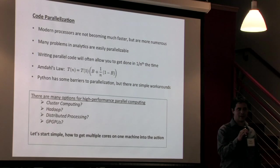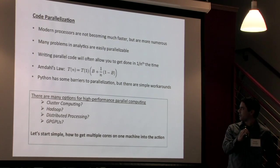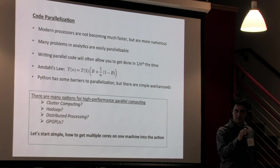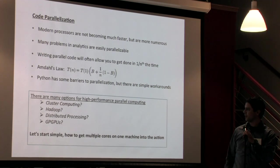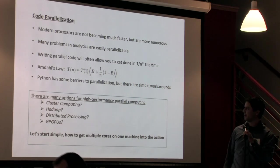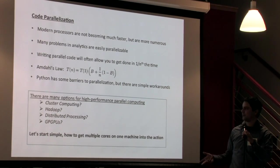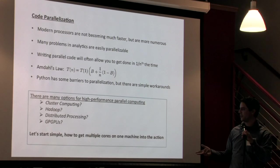So Python has a few barriers to parallelization. It's not quite as easy to do as in some other coding languages but in general there are some pretty simple workarounds for it. Now if you've gotten into this at all you probably noticed that there are many advanced hardware setups that you have for your high performance parallel computing: computing clusters, distributed processing, Hadoop clusters, clusters of GPUs.